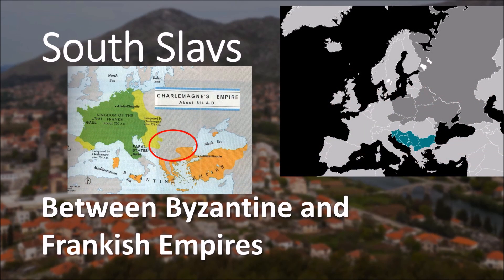At that time, there were two major empires: Byzantine and Frankish. Between them was a large stretch of land not controlled by anyone. South Slavs saw that as an opportunity to settle without being controlled, and that's how Slavs from Russia and Ukraine came and settled in the Balkans and Bosnia.